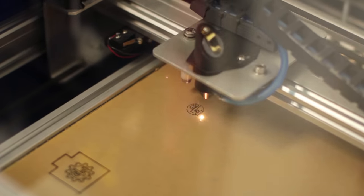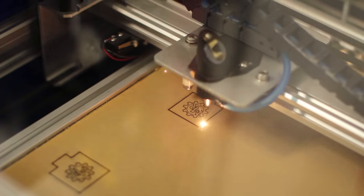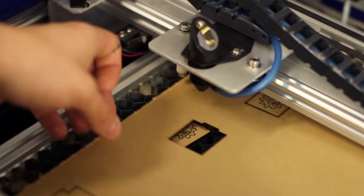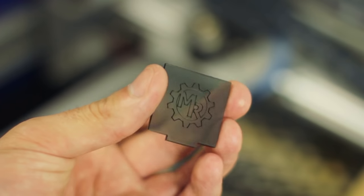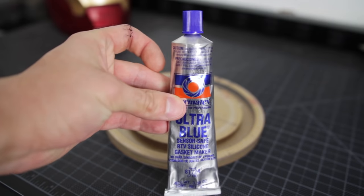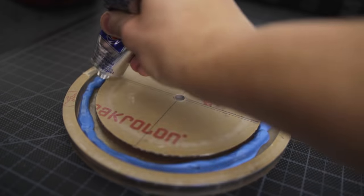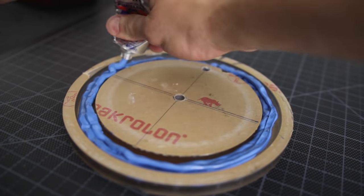I laser cut a squeegee out of acrylic to apply the silicone to the proper height to prevent the pot from being pushed too far down. You can easily make this without a laser. I apply the silicone RTV and make sure that I apply a liberal amount, but not too much to where Republicans hate me.